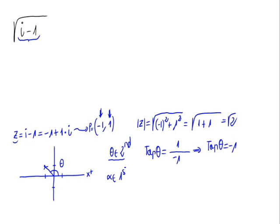Now let's calculate this angle from the second quadrant whose tangent equals minus 1. We'll find a reference angle alpha from the first quadrant such that the tangent of alpha has the same magnitude as the tangent of theta but with a positive sign, that is, plus 1. The tangent of alpha equals 1 means alpha equals 45 degrees.